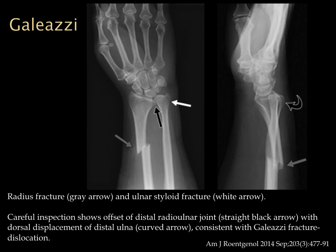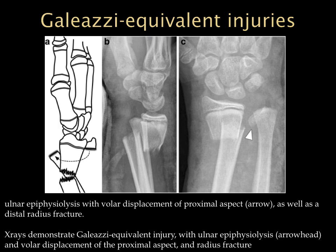In a Galeazzi fracture we see a distal radial shaft fracture, and if not thorough we'll miss the distal radioulnar joint dislocation. This matters because if the patient is casted without both the fracture and dislocation reduced, at the two-week follow-up it may be too late and operative reduction will be needed. In pediatrics we also have the Galeazzi equivalent, where the epiphysis is involved — the distal radioulnar joint may appear located but there is actually a dislocation due to epiphysiolysis of the epiphysis from the metaphysis.